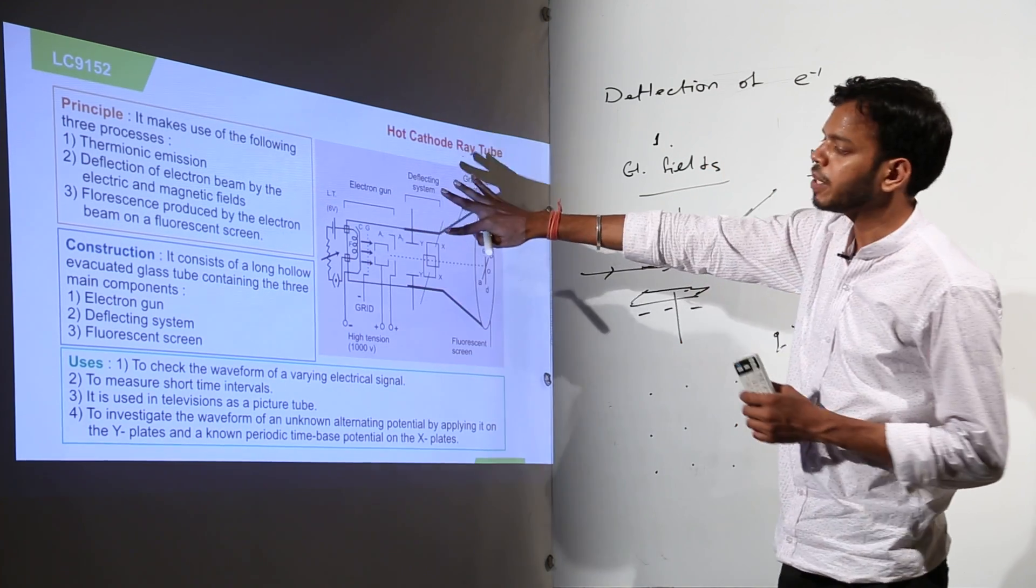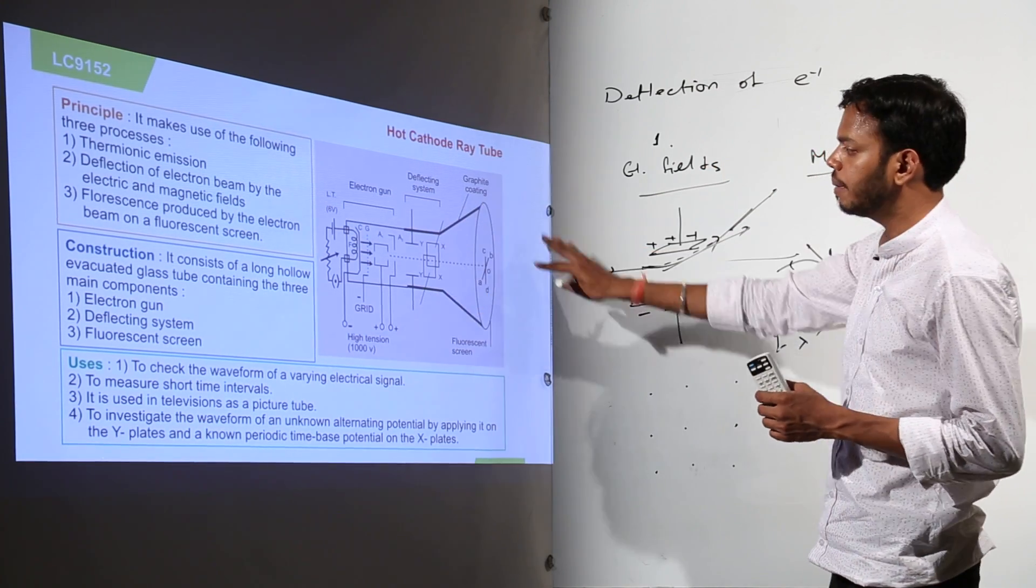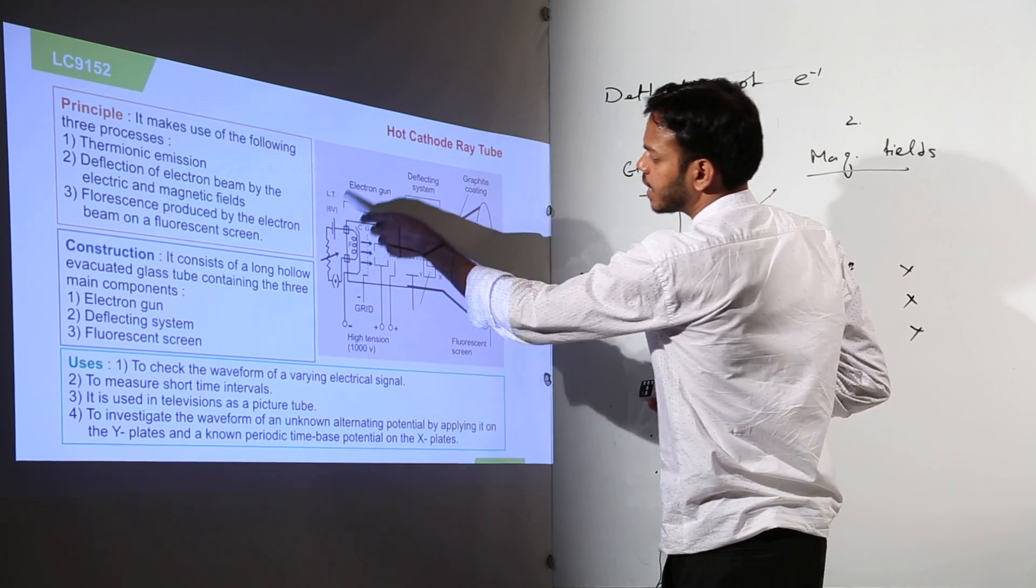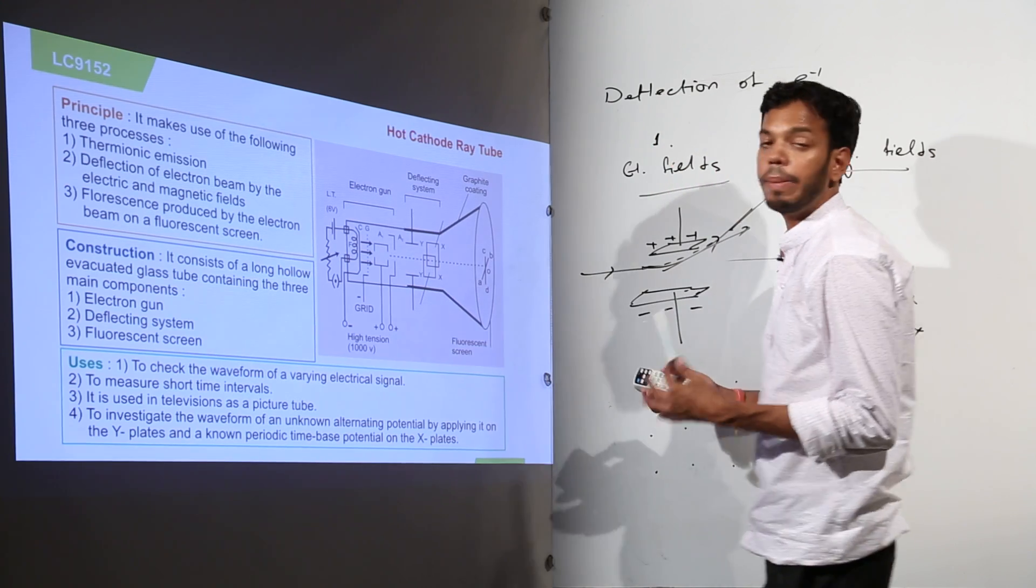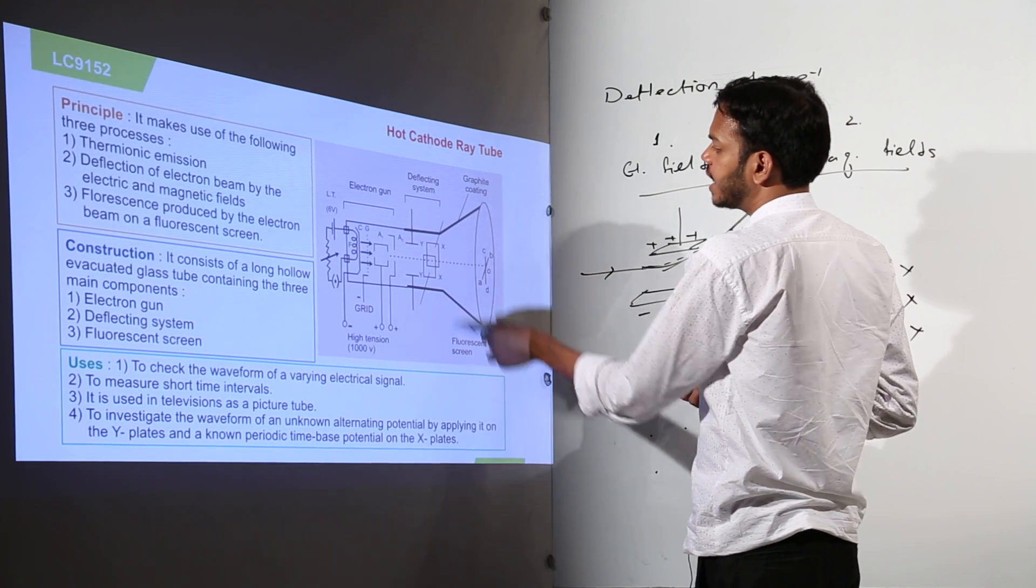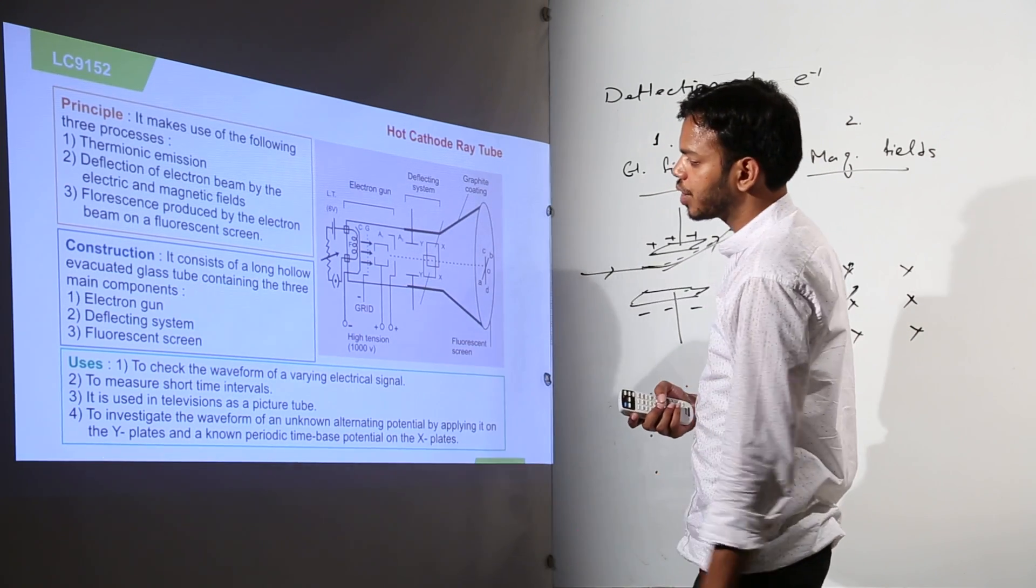So three principles, three working parts. This much part is electron gun, this much part is deflection system where you can apply electric and magnetic field and this one is the fluorescent screen.